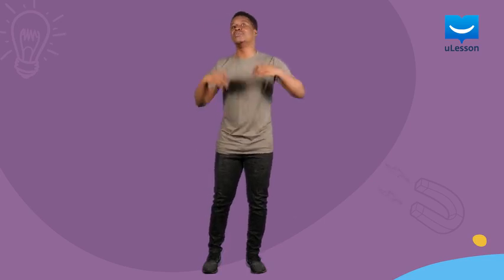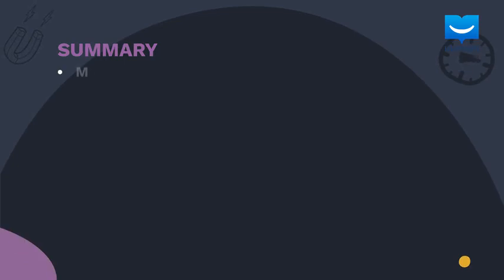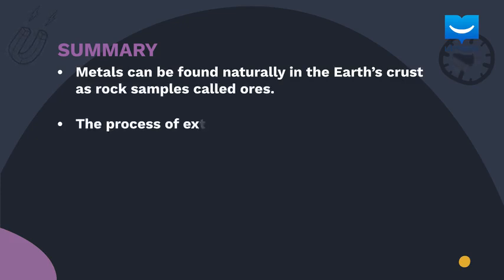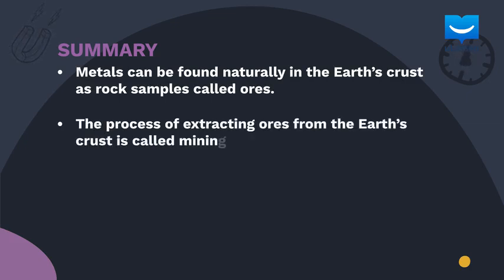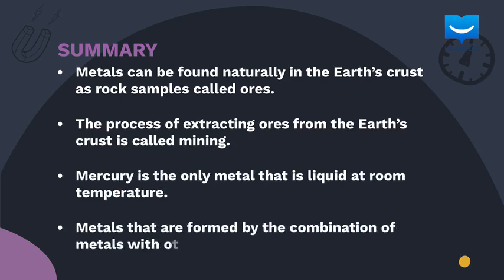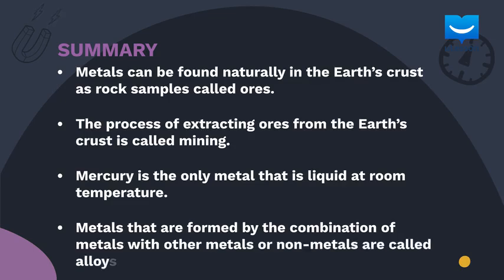The major points to take from this lesson include: metals can be found naturally in the earth's crust as rock samples called ores; the process of extracting ores from the earth's crust is called mining; mercury is the only metal that is liquid at room temperature; and metals formed by the combination of metals with other metals or non-metals are called alloys.